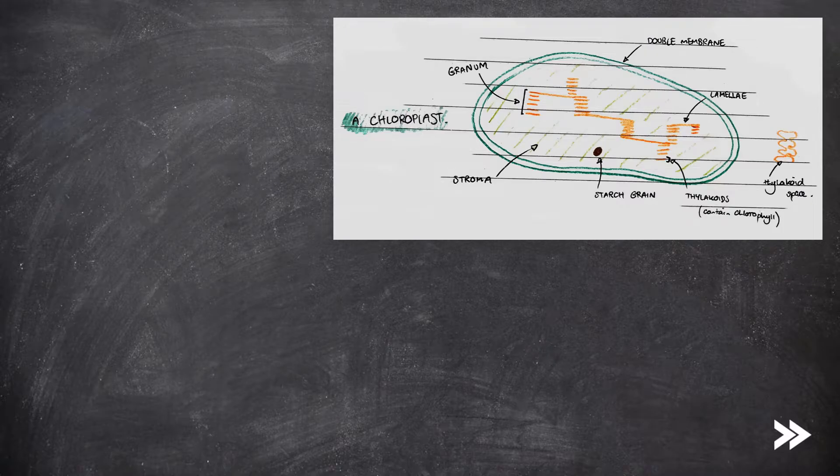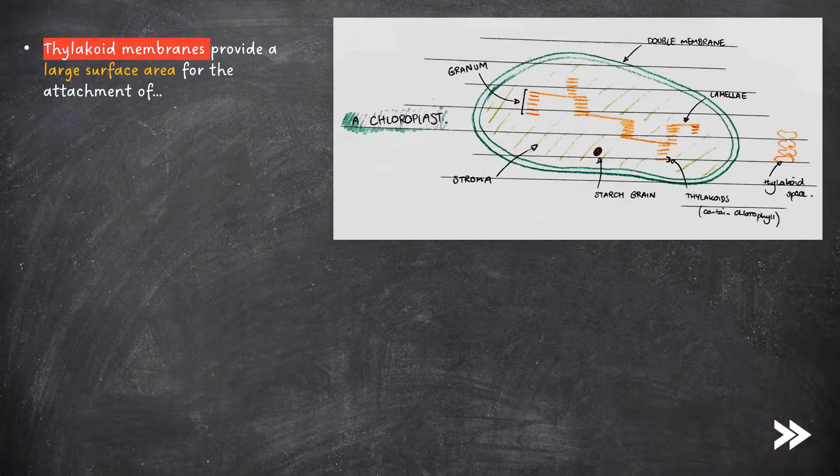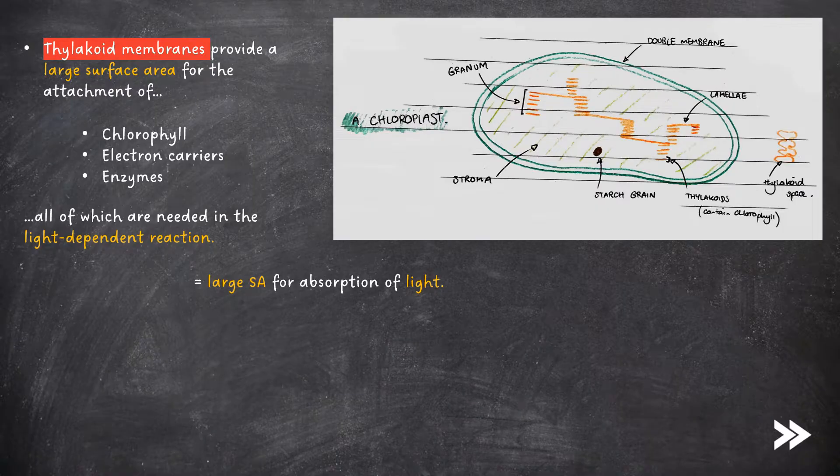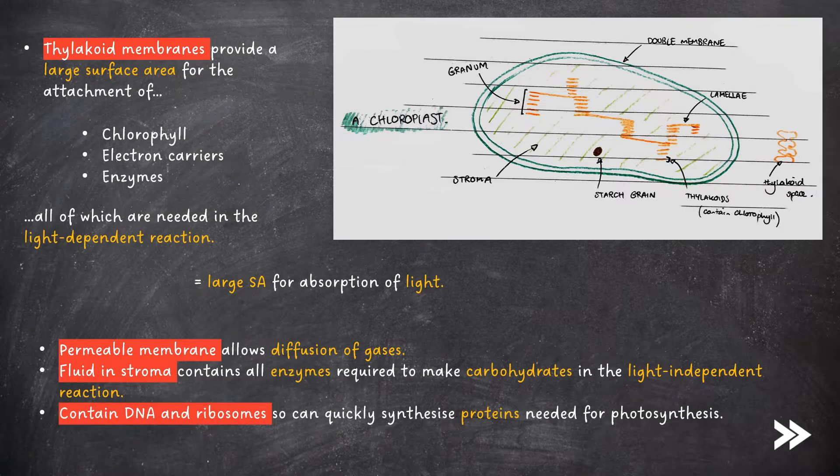There are some key features that chloroplasts have. Thylakoid membranes that provide a large surface area for the attachment of chlorophyll, electron carriers and enzymes, all of which are needed in the light-dependent reaction. The membranes also provide a large surface area for the absorption of light. The permeable membrane allows the diffusion of gases. The fluid in the stroma contains all the enzymes required to make carbohydrates in the light-independent reaction. Chloroplasts also contain DNA and ribosomes, so can quickly synthesize the proteins needed for photosynthesis.